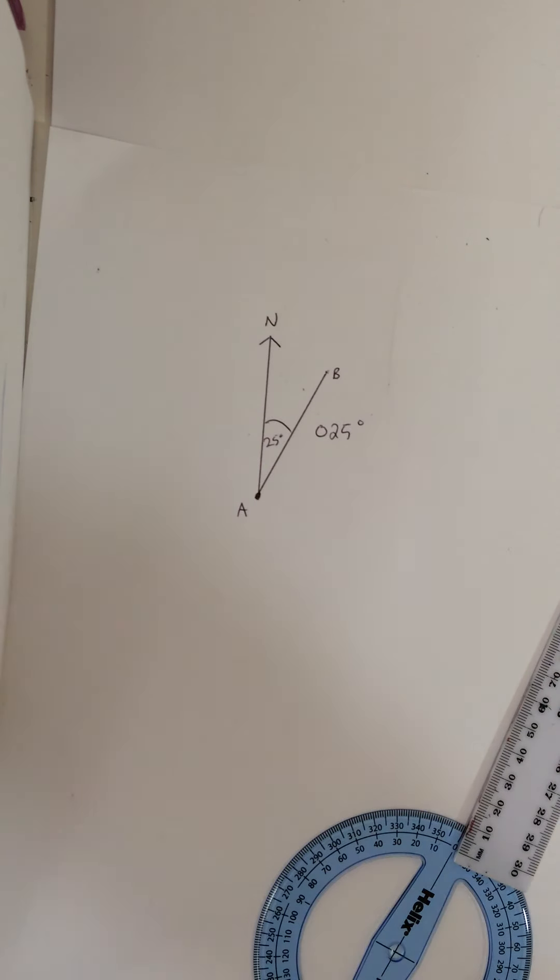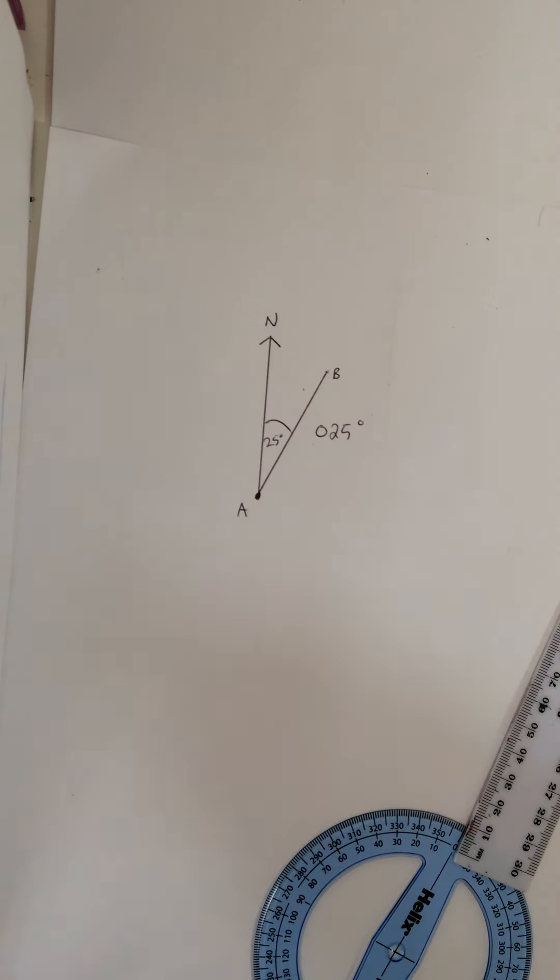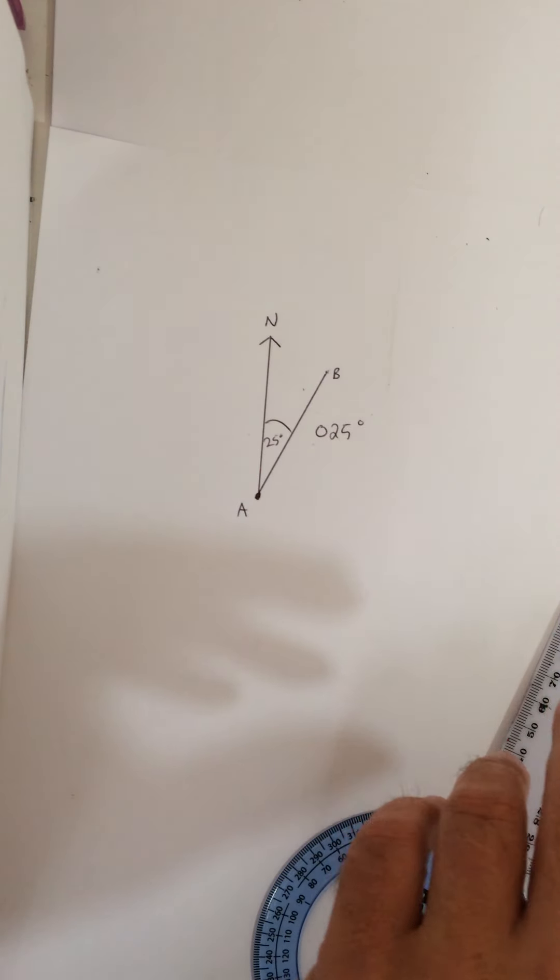What I'd like you to do, could you please draw underneath in your books, just draw this please. So you have your line going to north, then do your 25 degree bearing, and write your 025 degrees. Do that in your books, nice and neatly. Pause the video while you're doing that, and then we'll carry on afterwards.